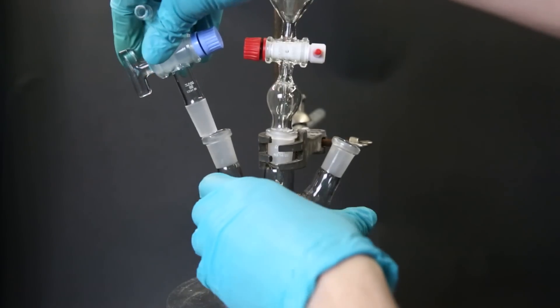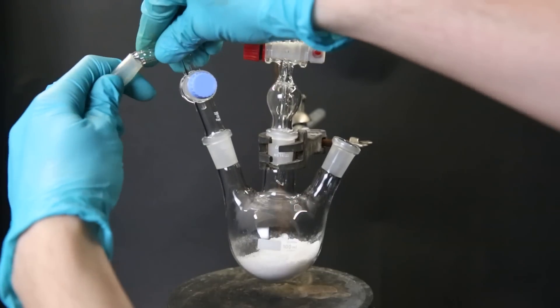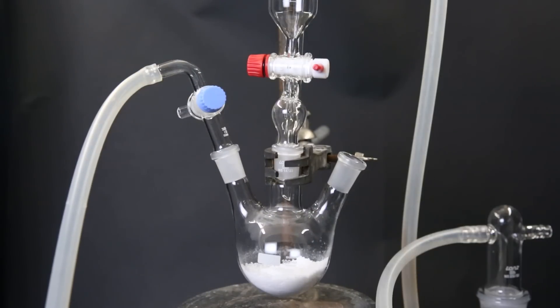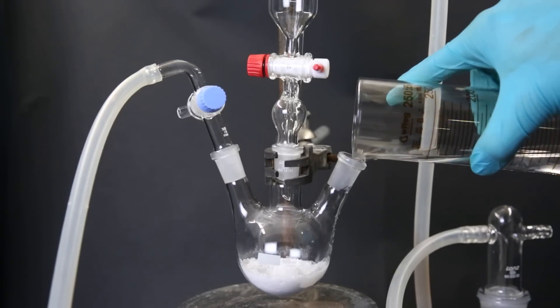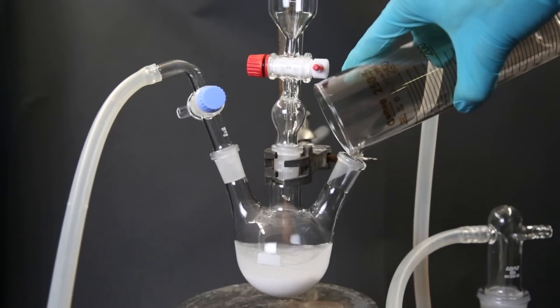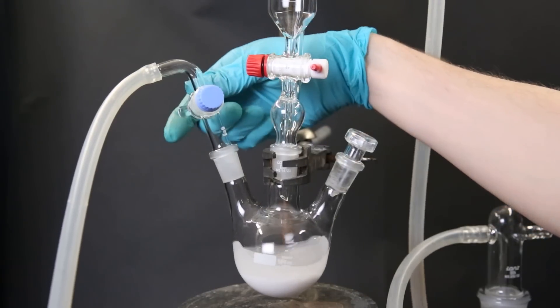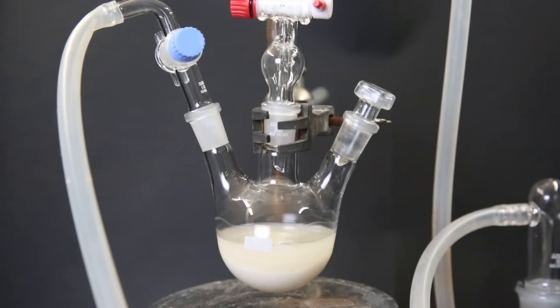I add a dropping funnel and a gas adapter, and then attach an argon line to the setup. On top of the dropping funnel, I add another gas adapter and connect it to a gas washing bottle, which will prevent any air from getting into the setup. Now I add 50 mls of THF to the flask. I then stopper the flask, which seals the setup completely, and I start the argon flow to purge out all of the air.